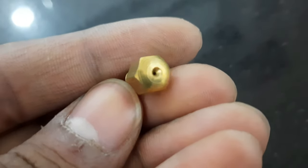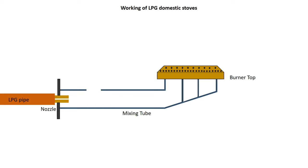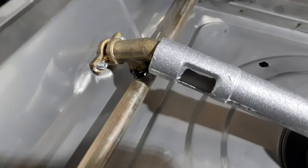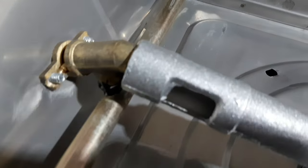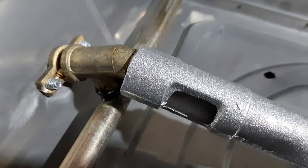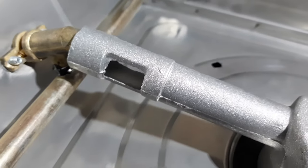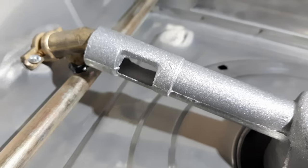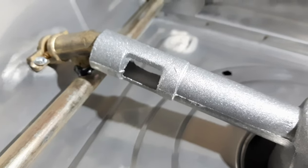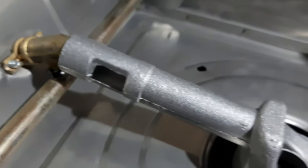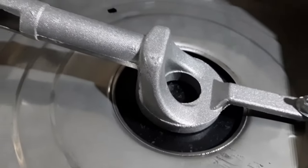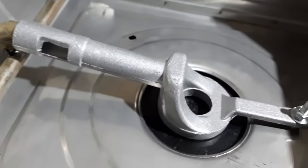The second part is the mixing tube. It is a tube in which mixing of air and fuel takes place. It is designed in such a way that it produces a homogeneous mixture using entrained air from the air opening port, and delivers it to the burner head for combustion.